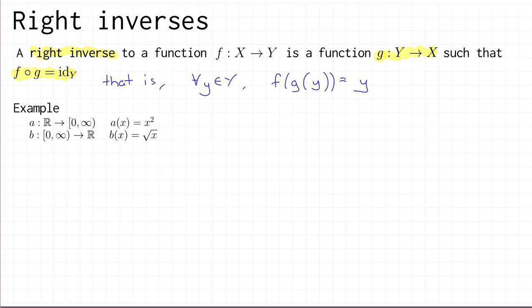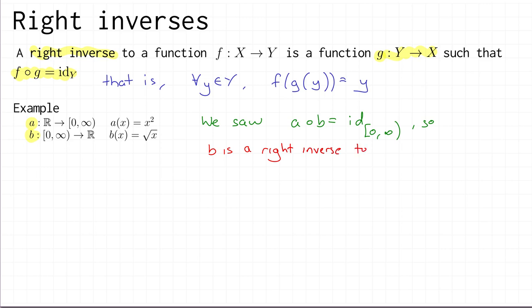Let's revisit the same example: function a from the real numbers to the non-negative real numbers with a of x equals x squared, and b from the non-negative real numbers to the real numbers given by the square root function. We've already seen on the previous slide that a composed with b equals the identity on the non-negative real numbers. So that tells us that b is a right inverse to a. Now let's ask: does b have a right inverse? We know b has a left inverse — does it also have a right inverse?